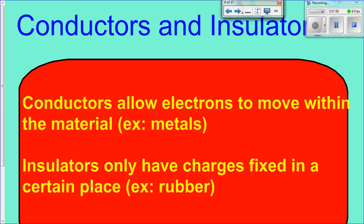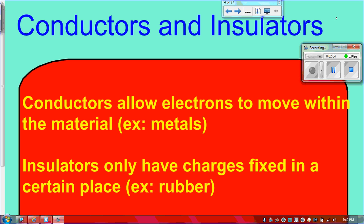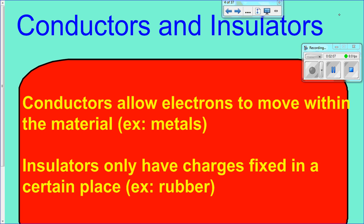Some other definitions we need to be aware of are conductors and insulators. Now, you may be aware of these terms maybe from if you've ever done maybe work around the house or if you're really into electrics as a hobby. But conductors are called that because they are allowed to conduct electricity. Or another way of saying that is conductors allow electrons to move within them. So electrons are allowed to move freely. An example of a conductor, and there's many examples, but an example of a conductor is metals. We use metals in our electricity in our houses, such as copper, because metals allow electrons to move.